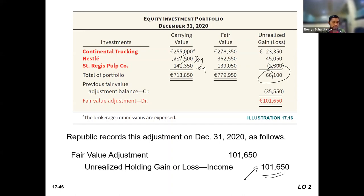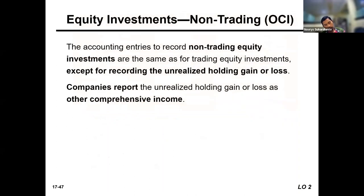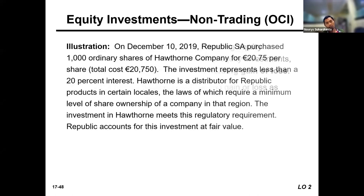So far, this is what we have in equity investment for trading. If the investment is not for trading, the only difference is when we recognize unrealized gain or loss. We recognize unrealized holding gain or loss in other comprehensive income — part of the equity section. That is the only difference; the rest is the same as trading investment.